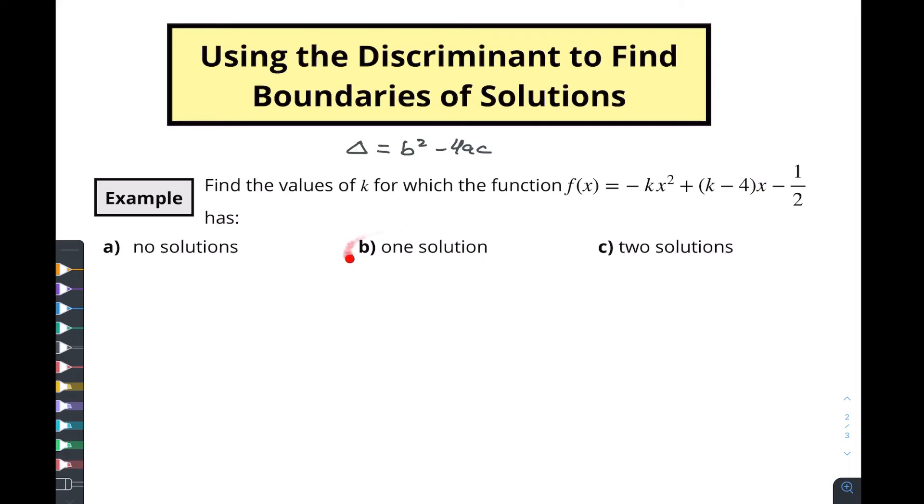If you remember, to find one solution our discriminant had to equal zero. To find no solutions it's where our discriminant was less than zero, and to find two solutions is where our discriminant was greater than zero.